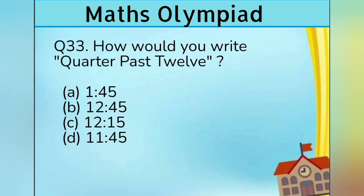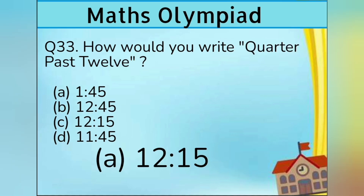Question number 33. How would you write Quarter past 12? Option A 1:45, Option B 12:45, Option C 12:15, and Option D 11:45. Answer is Option C 12:15.